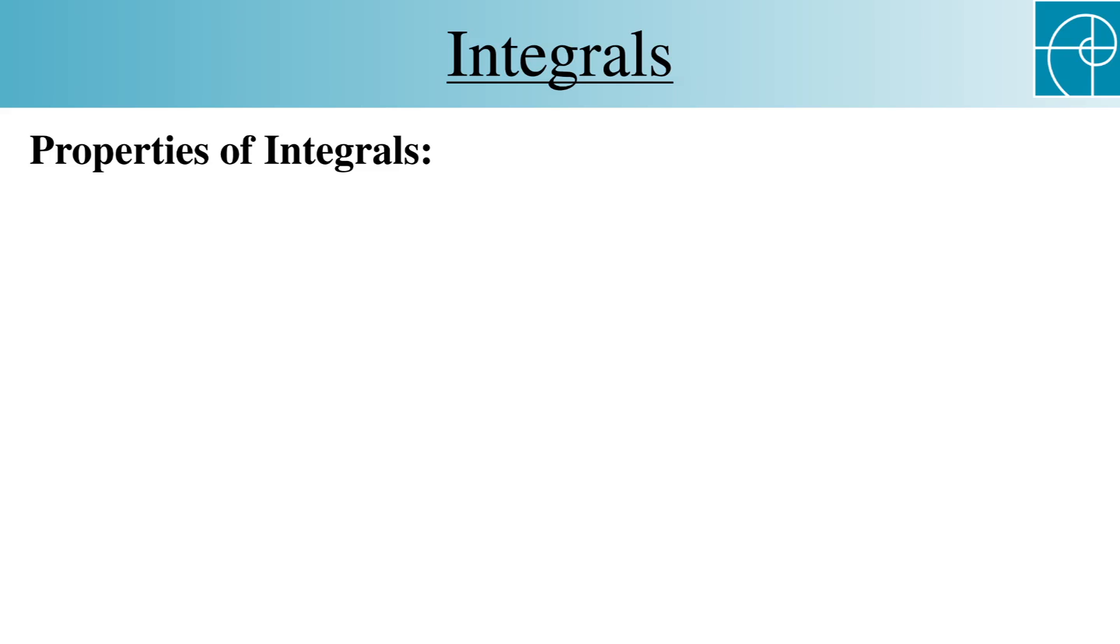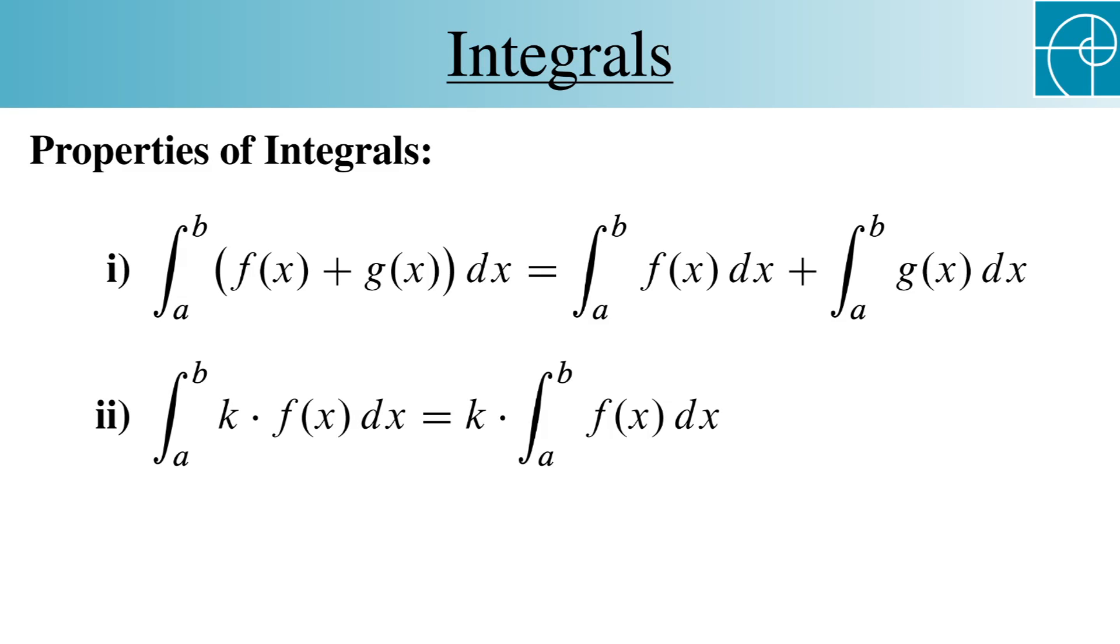First, the integral of a sum is the sum of the integrals. Second, a constant multiple can be pulled outside of an integral. Third, an integral from a to b can be split into two pieces, one piece from a to c and the other from c to b.